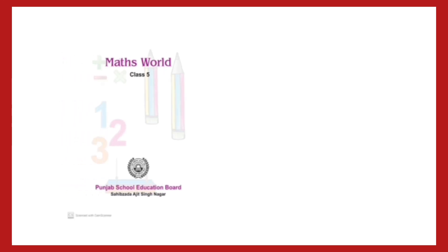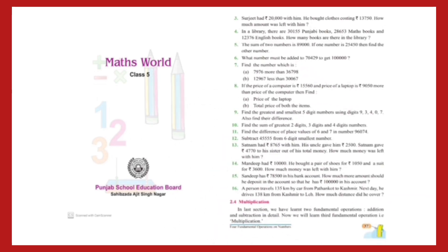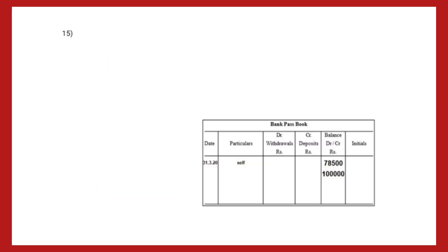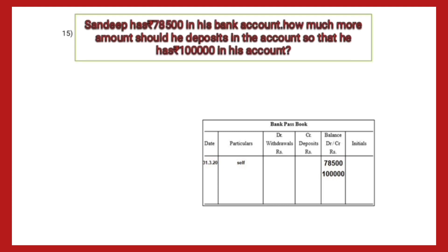Hello children, today we are going to discuss Maths World Class 5 on page number 37. We are going to discuss question number 15 and 16. Here is question number 15: Sandeep has rupees 78,500 in his bank account. How much more amount should he deposit in the account so that he has rupees 1 lakh in his account?